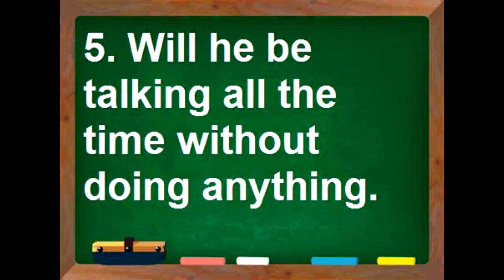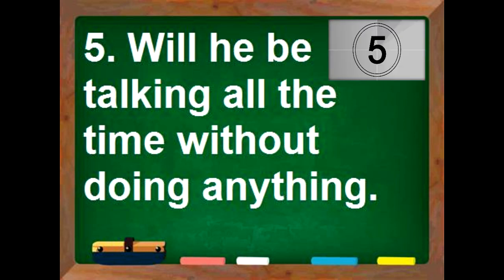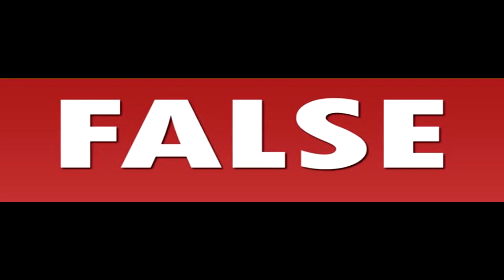Number 4: Tell him that he shall never repeat that mistake. — If your answer is true, then you are correct. Number 5: Will he be talking all the time without doing anything? — If your answer is false, then you are correct.